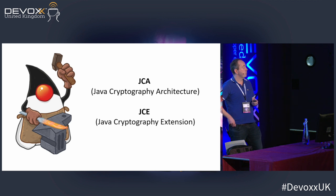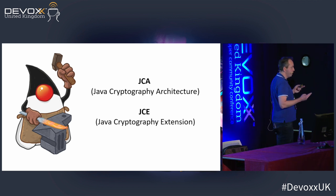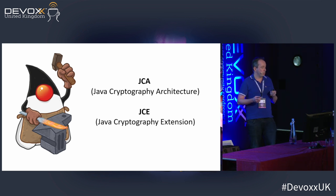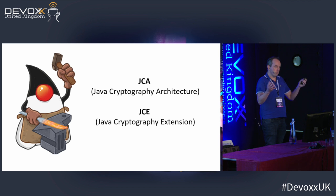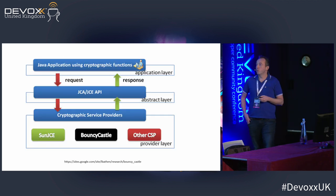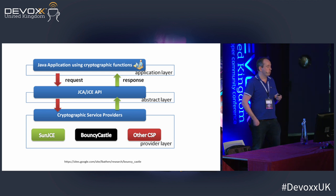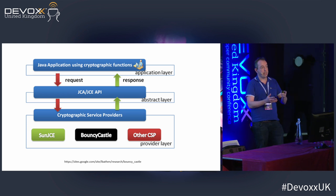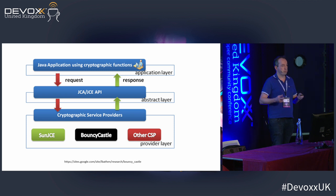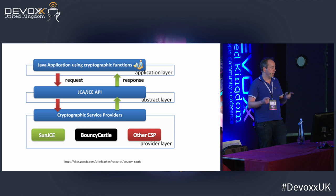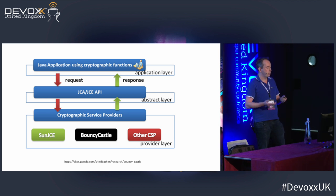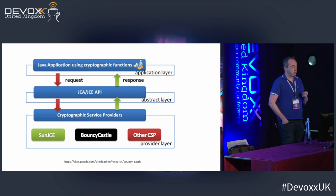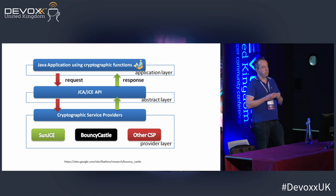Let's look at how this is implemented in Java. There are two concepts in the JDK: JCA, which is Java Cryptography Architecture, and JCE, which is Java Cryptography Extension. The original idea was that JCA was the API and JCE was the implementation, but they're now kind of mixed together. If you have a Java application that uses cryptographic functions, you send a request to the API, which then uses a cryptographic service provider — it's a pluggable architecture. The JDK includes the Sun JCE provider, but for advanced stuff you can use a third-party CSP like Bouncy Castle.